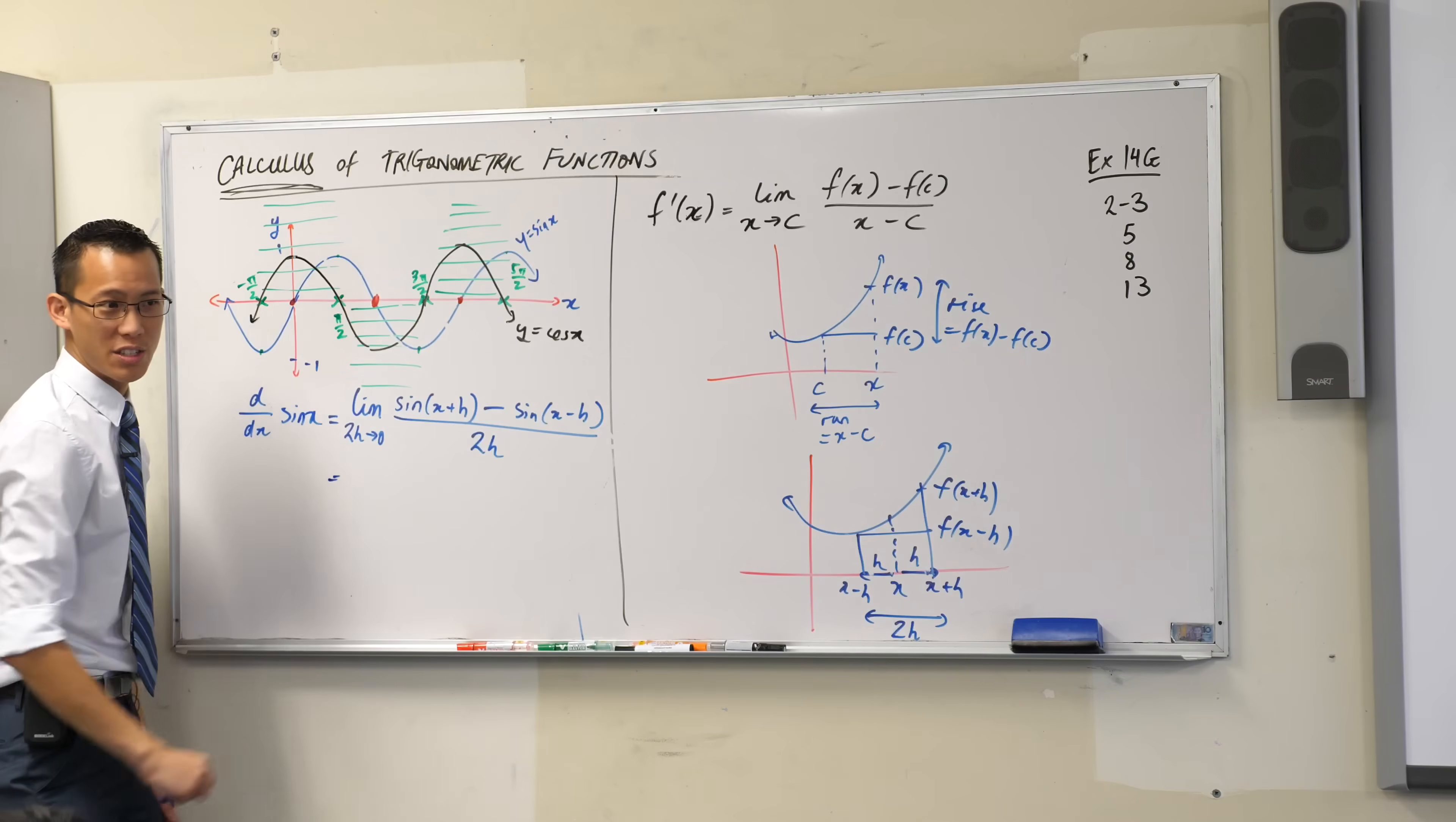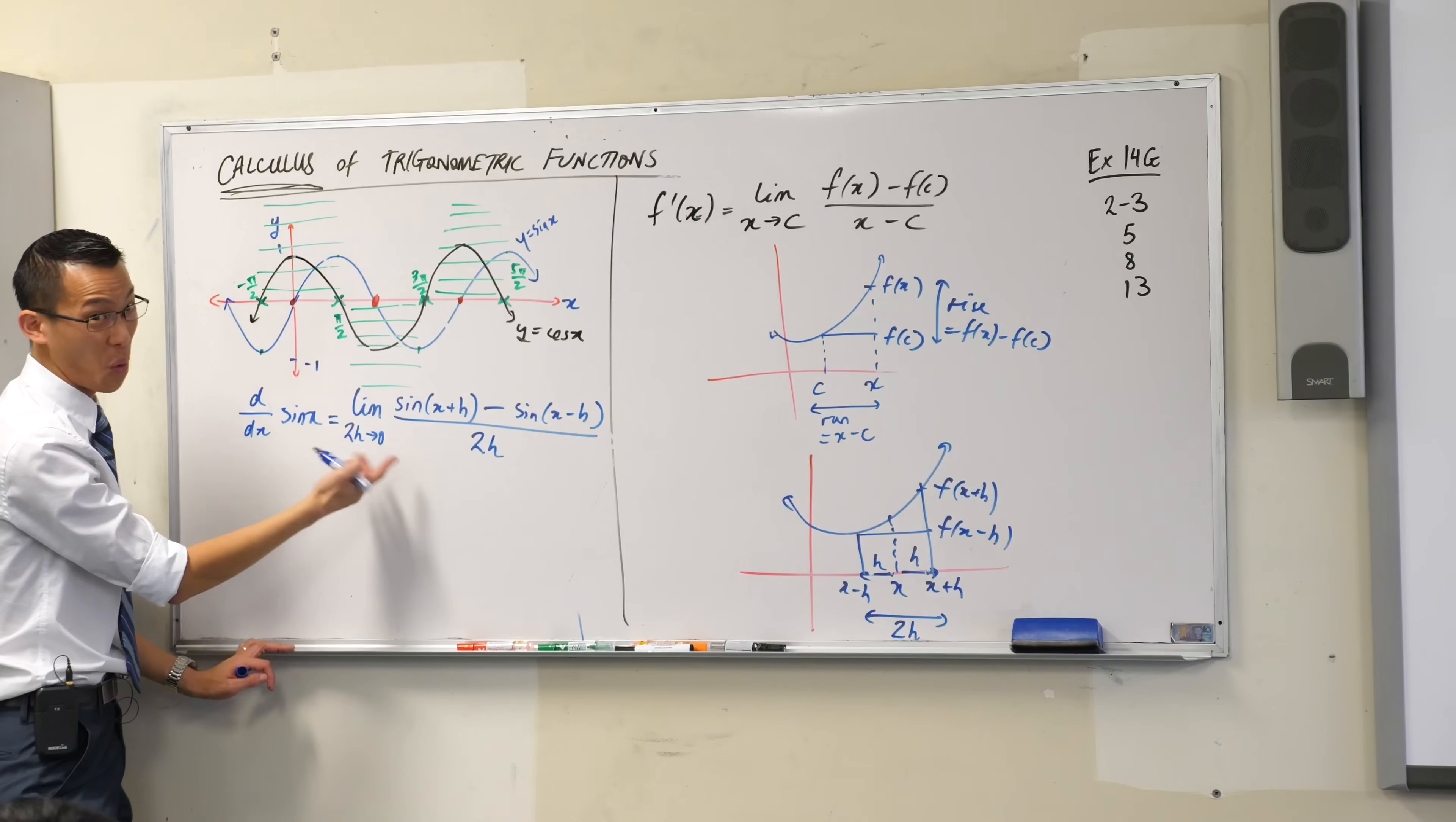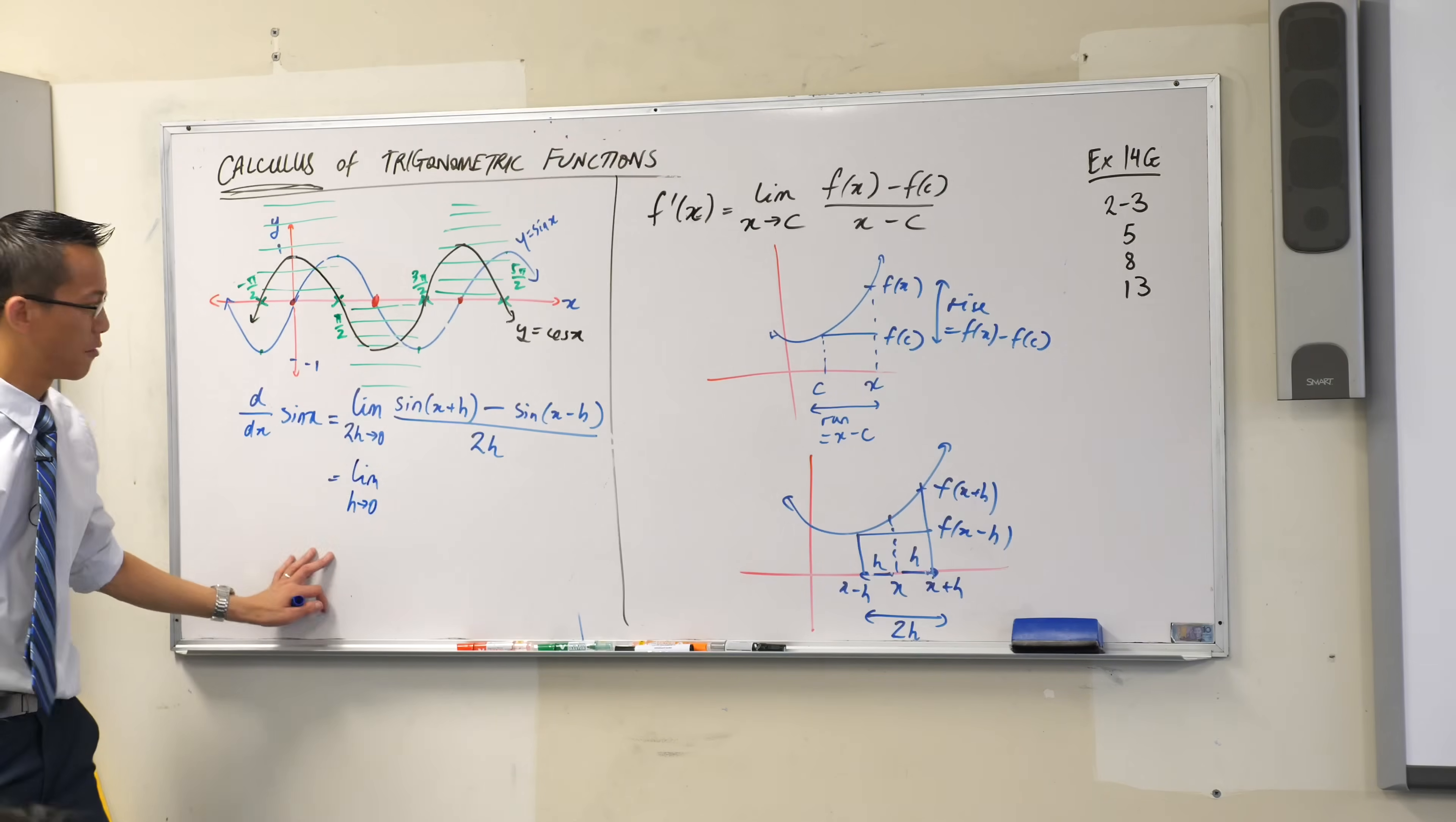First if 2h goes to zero, what does h go to? If 2h becomes zero, then h is also going to be zero. Like half of something really tiny, also something really tiny, so I'm just going to write limit as h approaches zero.